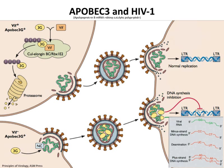APOBECs are incredibly important antivirals, but they don't work very well in humans because of VIF. These proteins also have other functions in the cell — there's interesting evidence that when they get out of control, that's one of the important steps leading to cancer, so they're really important proteins.